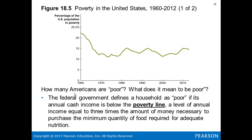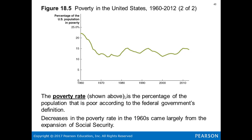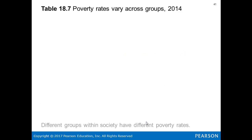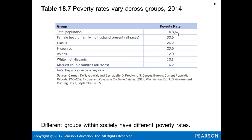How many Americans are poor and what does it mean to be poor? The federal government defines a household as poor if it has annual cash income below the poverty line — a level equal to three times the amount necessary to purchase the minimum quantity of food required for adequate nutrition. Decreases in the poverty rate in the 1960s came largely from the expansion of Social Security. Looking at poverty rates by group in 2014: the total population rate is 14.8%, but female heads of household with no husband present is 30.6% — the biggest contributing factor.